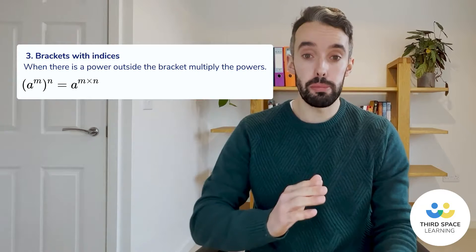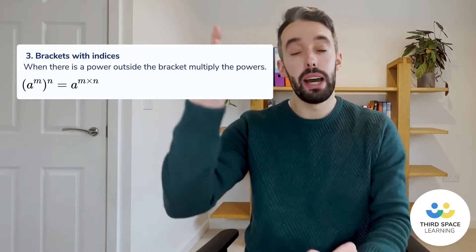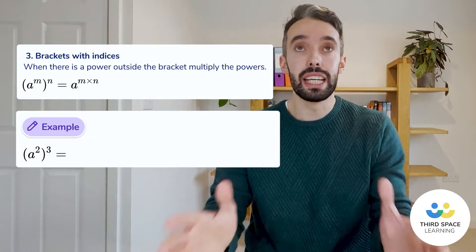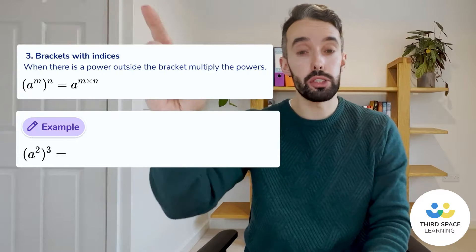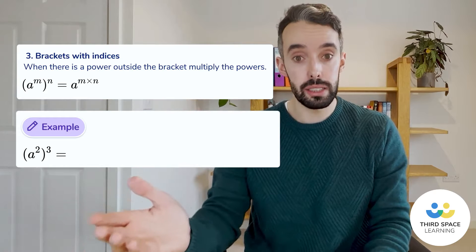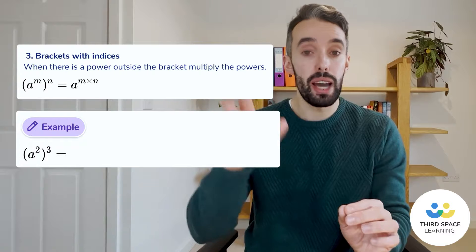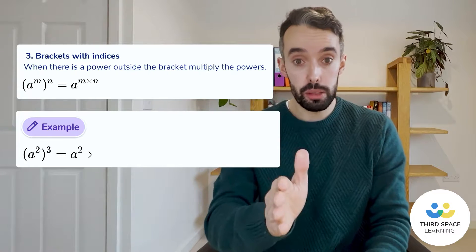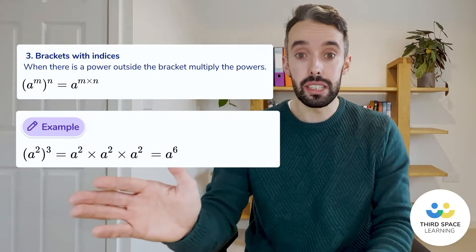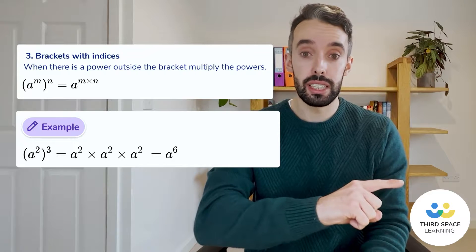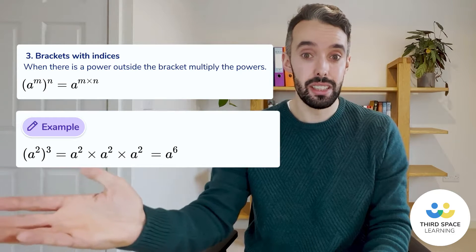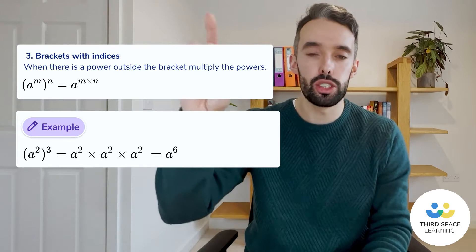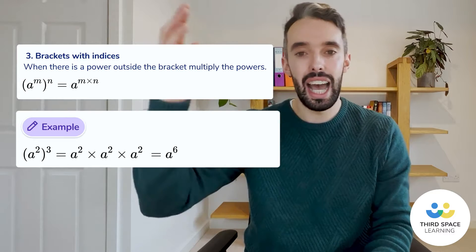The third law of indices is when we have a bracket and a power. All we have to do is multiply the powers together — the power inside the bracket by the power outside the bracket. For example, if we had a to the power of two in a bracket, all to the power of three, we would do two times three, which is six — so it would be a to the power of six. The reason that works is because a squared to the power of three is the same as a squared multiplied by a squared multiplied by a squared. That first law tells me I can add the powers: two plus two plus two is six. A quick way is just to multiply the powers inside and outside the bracket.